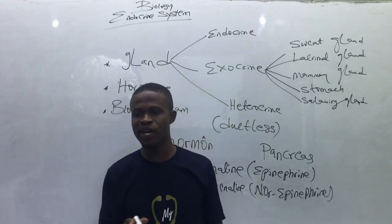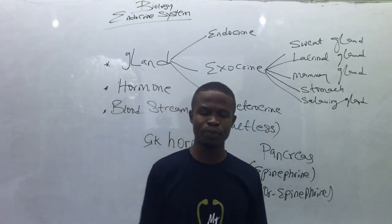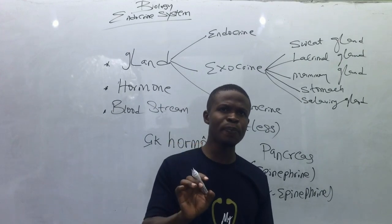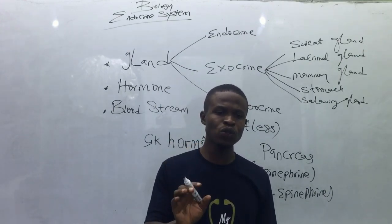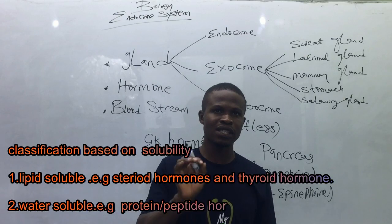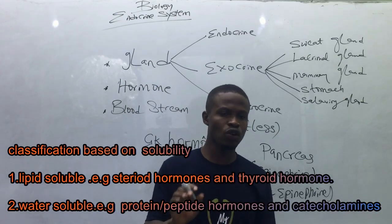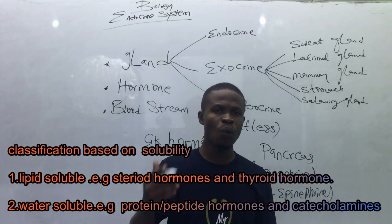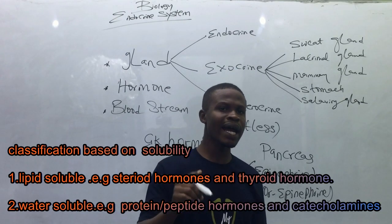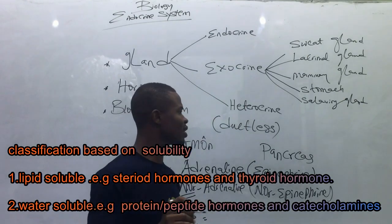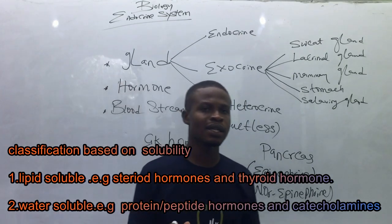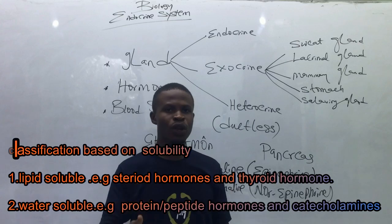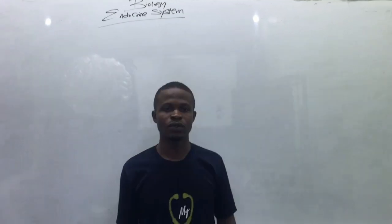Another classification is based on lipid and water solubility. The steroid hormones and the thyroid hormones belong to the lipid-soluble hormones, while catecholamines and protein and peptide hormones belong to the water-soluble hormones.